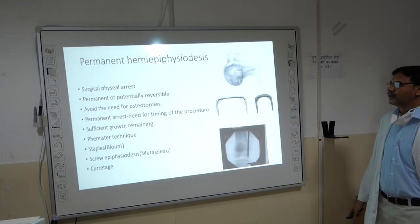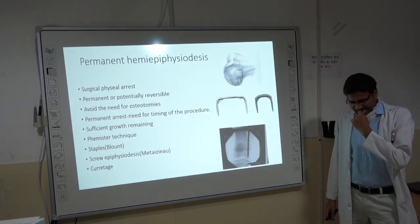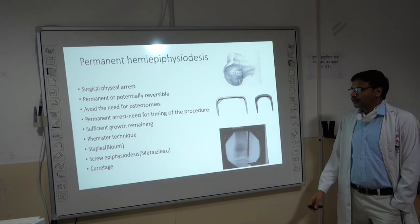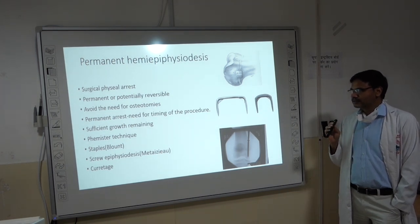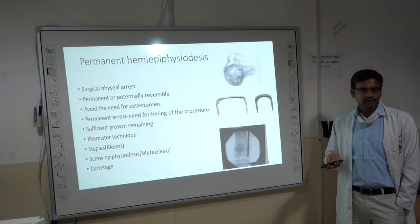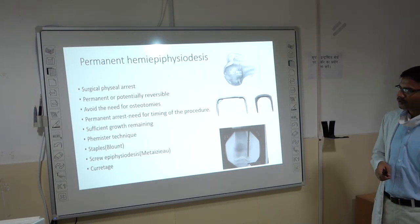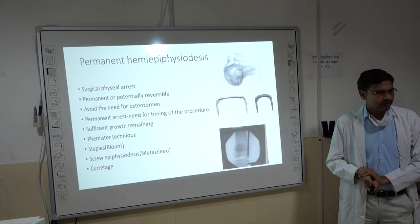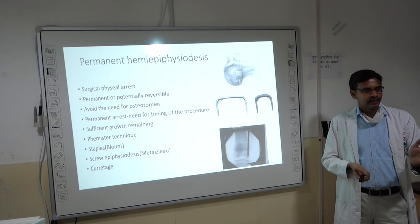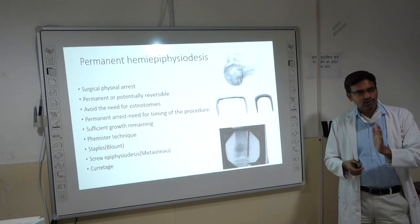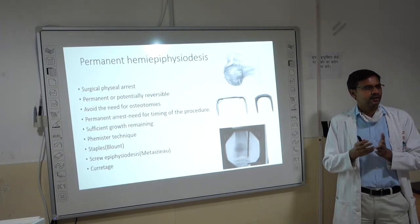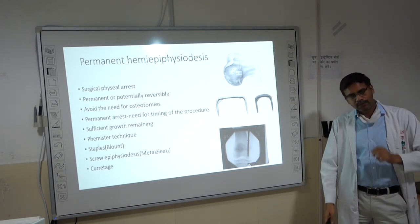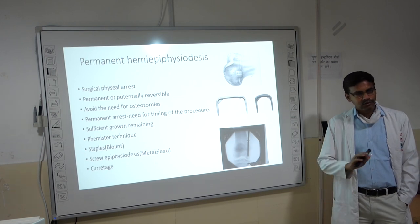Permanent hemi-epiphysiodesis is essentially surgical physeal arrest. Its advantage is that it avoids the need for osteotomies, as it is minimally invasive. Since it is permanent, timing is critical: if done too early, there may be iatrogenic reversal of deformity; if done too close to physeal closure, there may be no effect. There should be a minimum of 2 years of growth remaining before attempting this option.